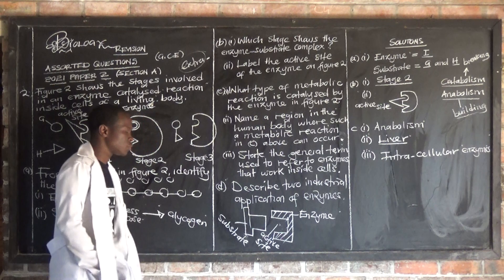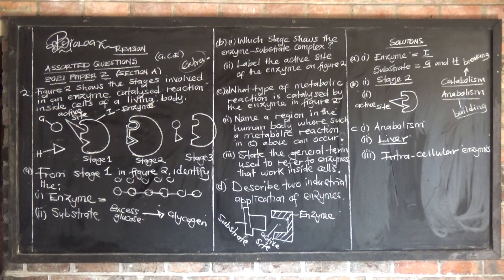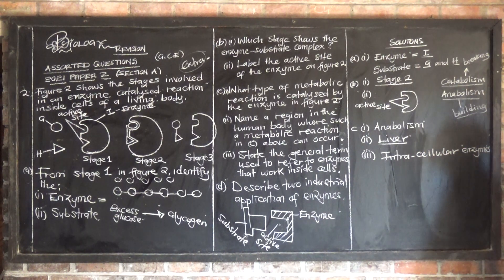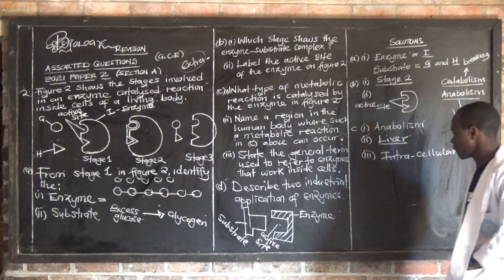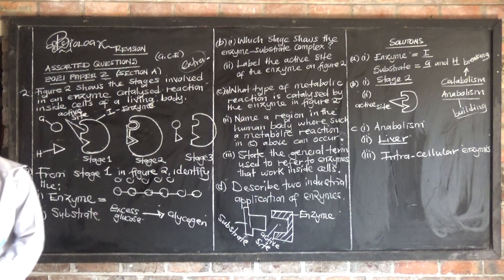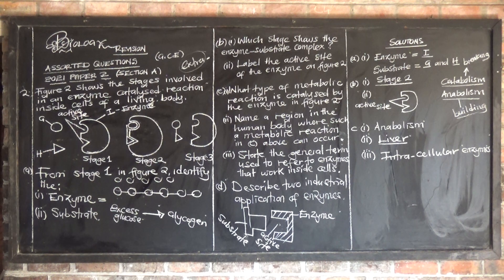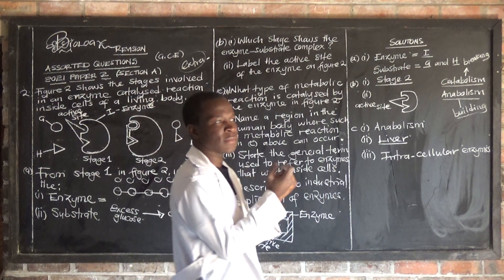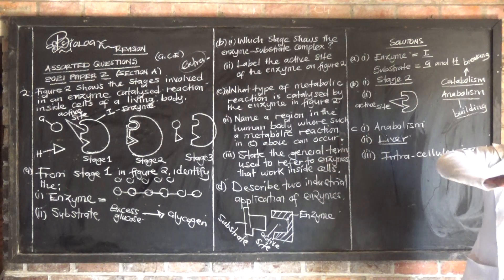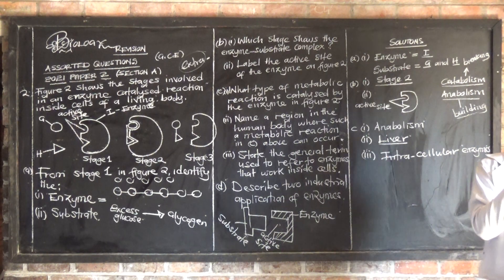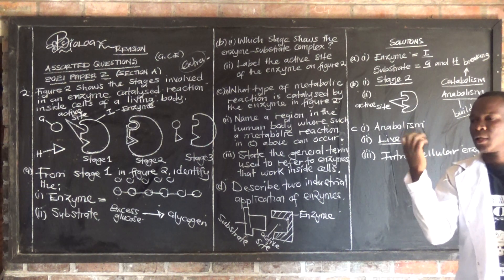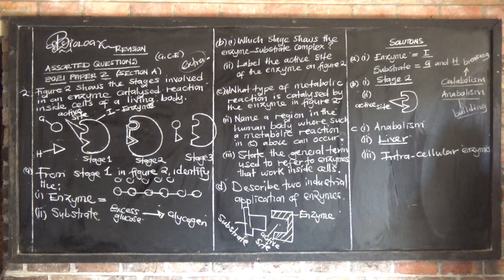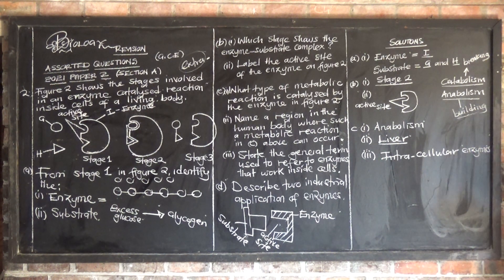The last question asks: describe two industrial applications of enzymes. Just two. Enzymes are used in baking and in brewing. They are also used in making washing paste — biological detergents contain enzymes which digest dead stains on fabric. So enzymes are used in baking, brewery, and washing paste or biological detergents.